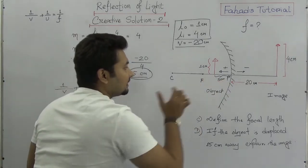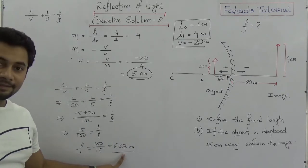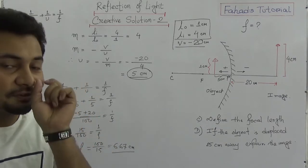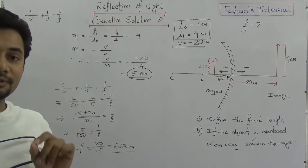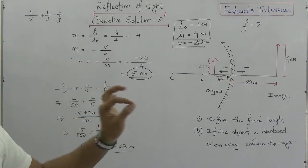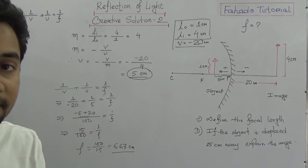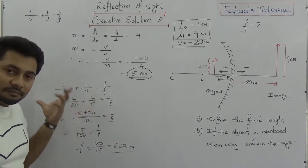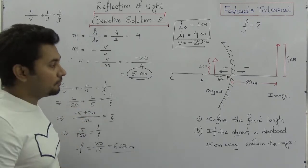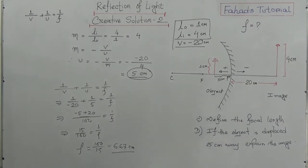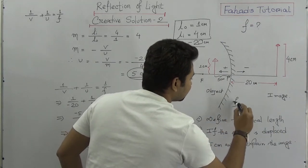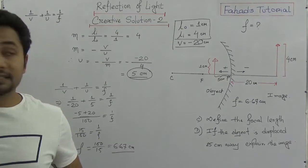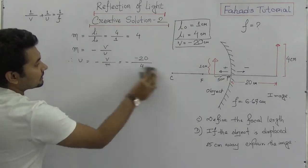So the focal length is 6.67 cm — we got it. Now you can see how we proceeded through the data given in the creative question. First identify what data is available, then find what was asked. The focal distance F is 6.67 cm. Now let's move on to find the answer to the next question, which is part D.